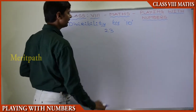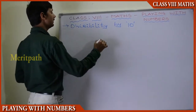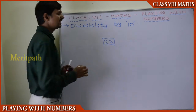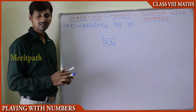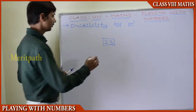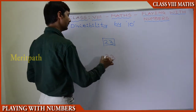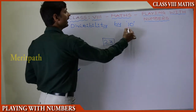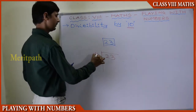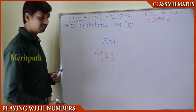We have taken here the number 23. Let us divide by 10 and see if it is divisible or not. When we divide 23 by 10, we are going to divide by 10 and check the remainder.